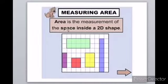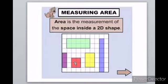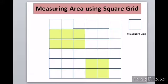It can also be called a 2D shape. What is a 2D shape? 2-dimensional — it has length and breadth, and we draw it on a piece of paper. These shapes — what is the space inside them? If we calculate that, it is called the area.